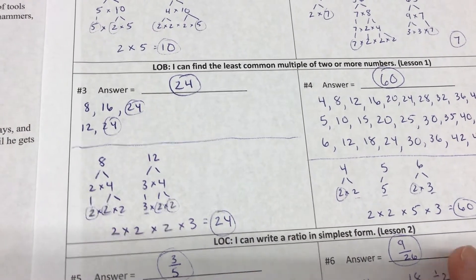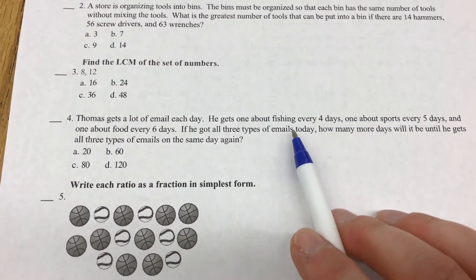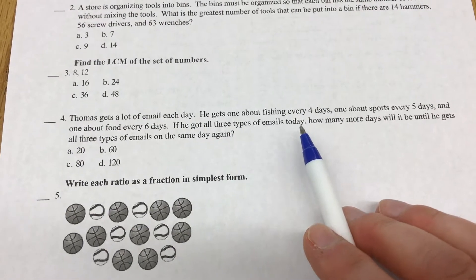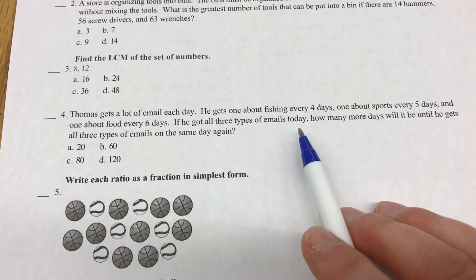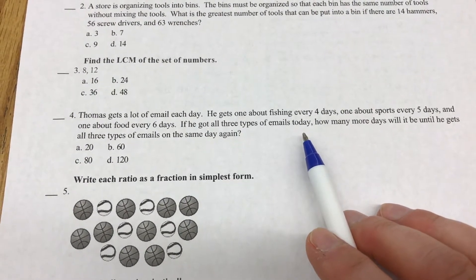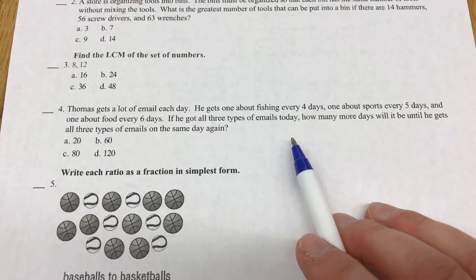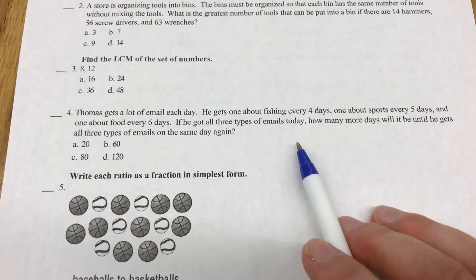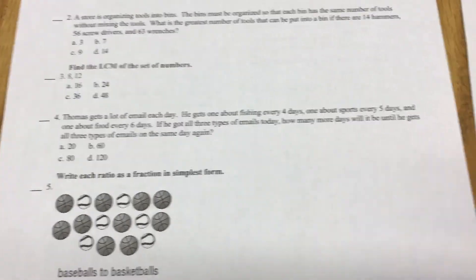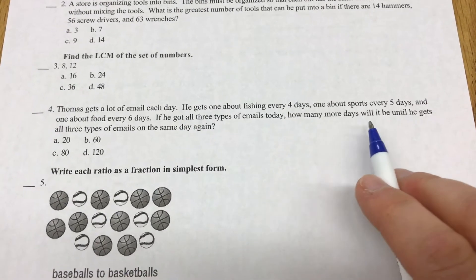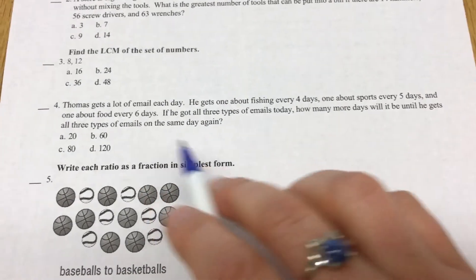And then this one here: Thomas gets a lot of email each day. He gets one about fishing every 4 days, one about sports every 5 days, and one about food every 6 days. If he got all three types of emails today, how many more days will it be until he gets all three types of emails on the same day again? So I took those three numbers and I'm trying to find the least common multiple, because it's how many more days until he gets them all on the same day again. Those are my keywords.